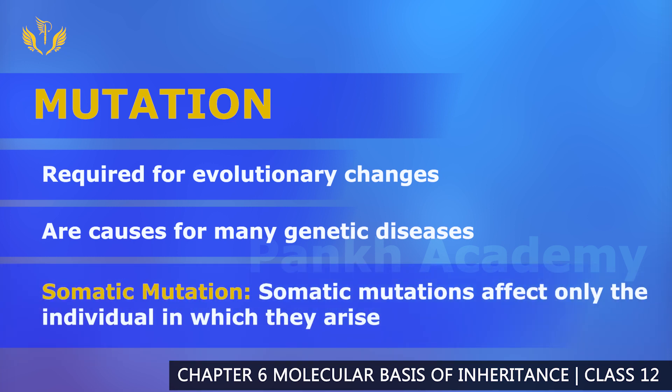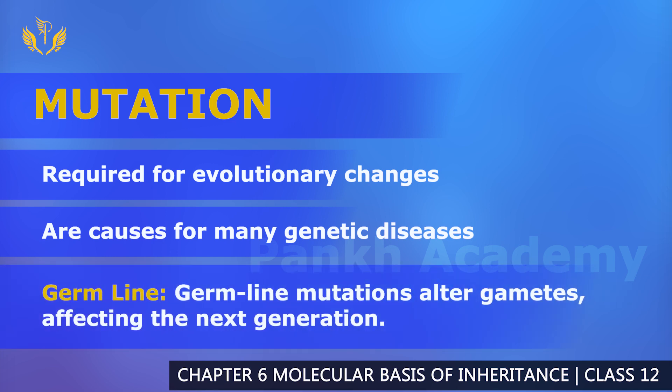There is also somatic mutation, which affects only the individual in which it arises. Another type is germline mutation. Germline mutation alters the gametes and therefore affects the next generation.